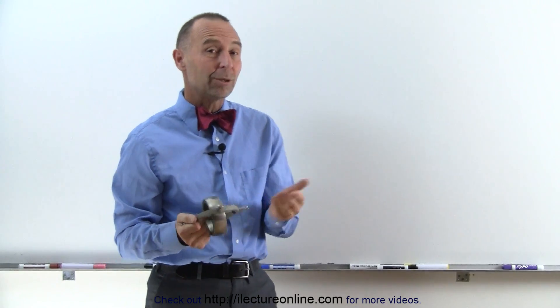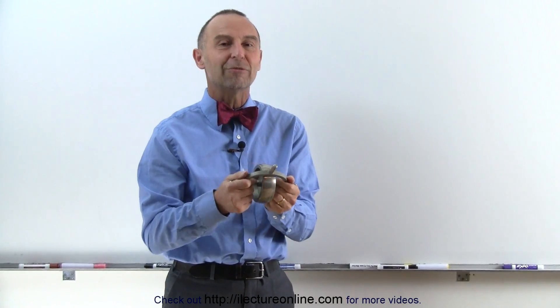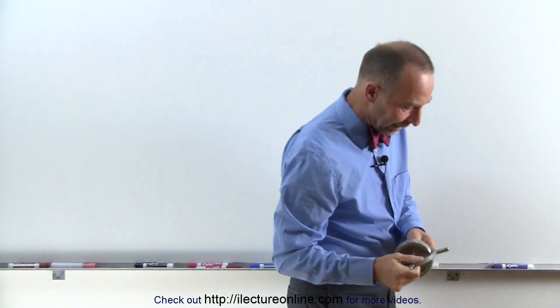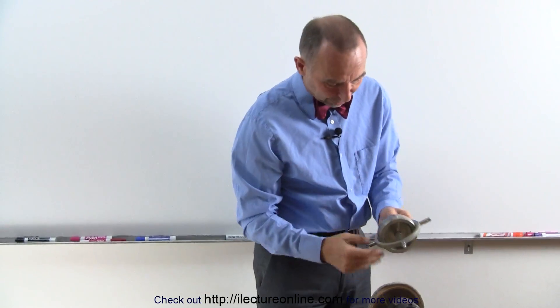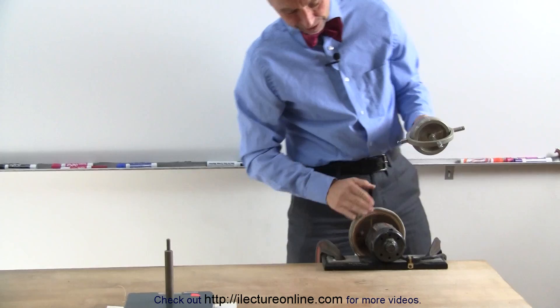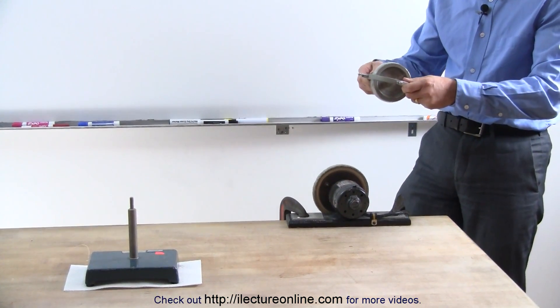So let's take a look at this. It will appear as if the gyroscope defies gravity. Let's try it, and what I need here, first I need to get it spinning. That's what this, almost looks like a shoe polisher, will accomplish.